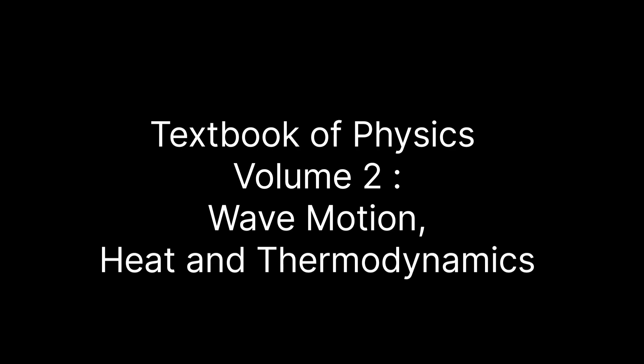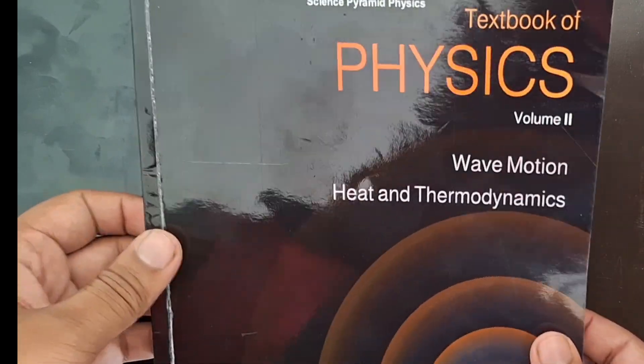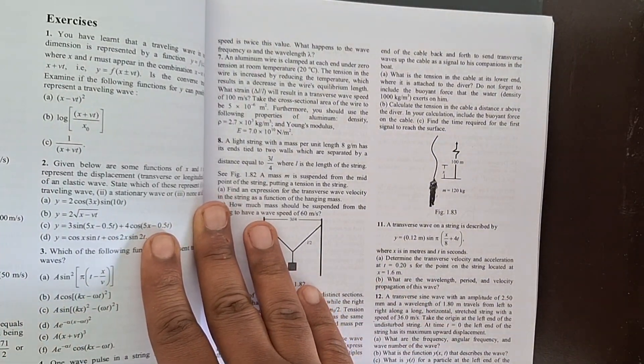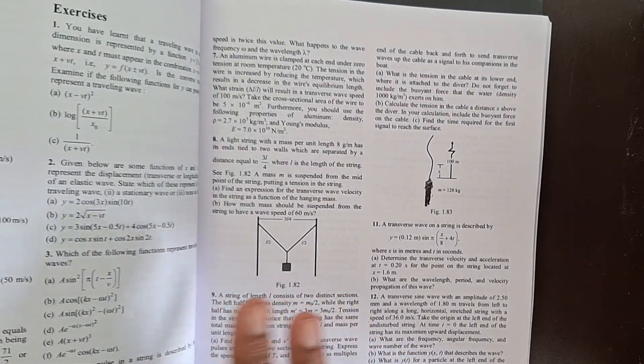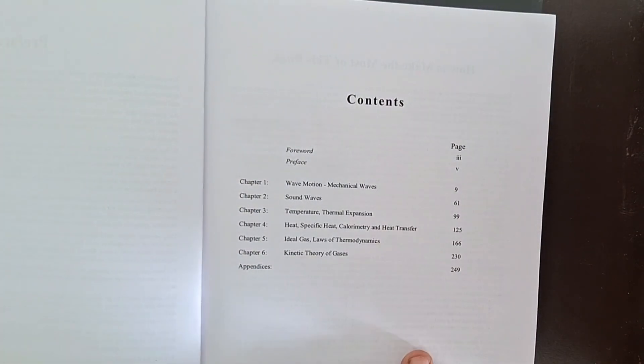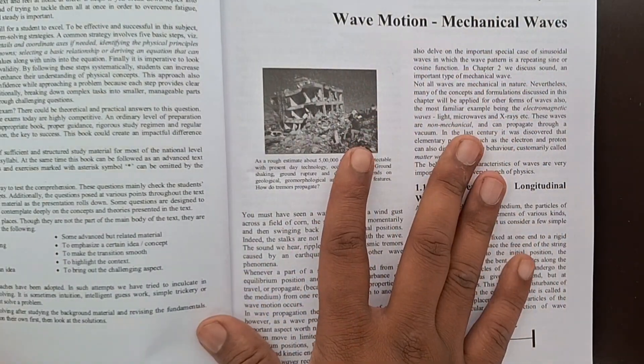There are some books that don't just explain concepts, they walk with you. They understand your confusion, they feel your fear before exams, they become your companion in the silence of the night when the world sleeps but your dreams stay wide awake. Textbook of Physics Volume 2, Wave Motion, Heat and Thermodynamics by Science Pyramid is one such book. This isn't just a textbook, it's a friend to every student who ever felt lost in the chaotic world of physics. When you open this book, you don't just see formulas and facts, you see clarity, you feel effort, the kind that understands what it's like to struggle with understanding a simple wave or the deep concept of entropy. Wave motion is not easy, but the way this book holds your hand from basic concepts to advanced applications, you begin to realize you are not alone in this journey.